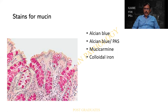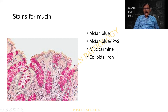Alcian Blue — a beautiful alternative or sometimes a supplement for the PAS stain. It can come in different pH: pH of 1, 2.5 or 3. Alcian Blue can be used in combination with PAS, periodic acid-Schiff.